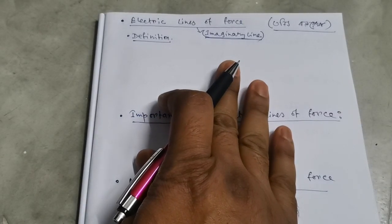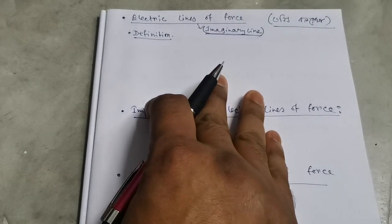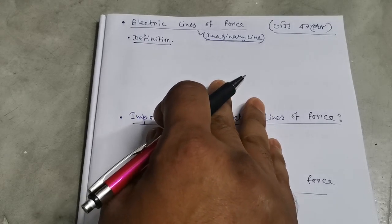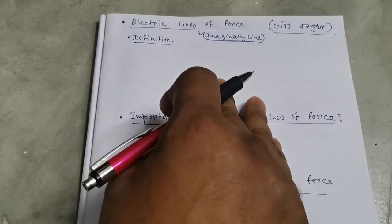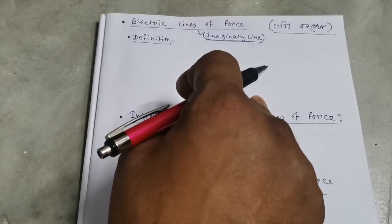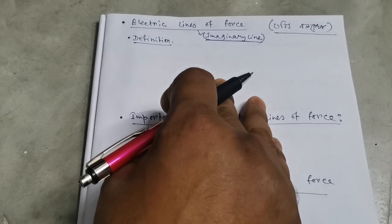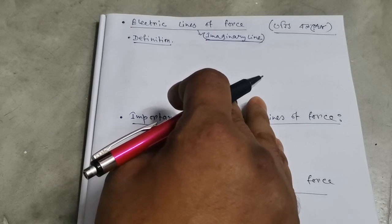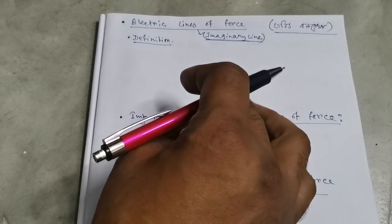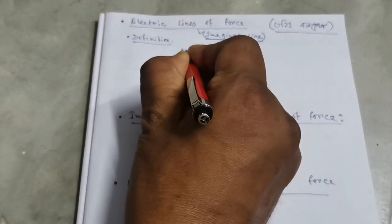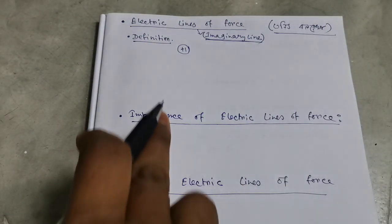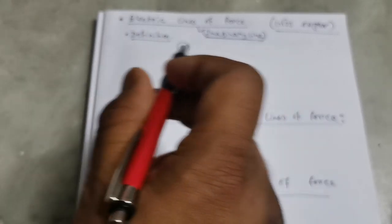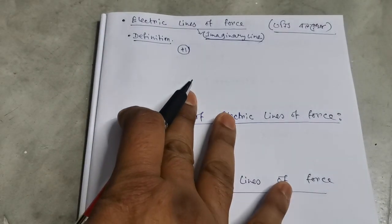If you look at Electric Lines of Force, what will be the electric field? We need to know about the electric field type and the electric field. First, the definition of the electric field must be seen as having plus and minus two types. The definition of the electric field line is defined by the unit positive charge. The line is drawn by the electric lines of force.